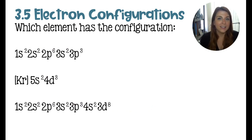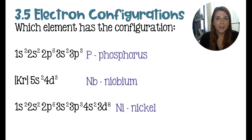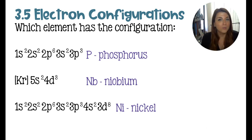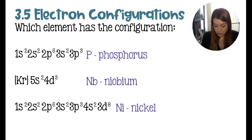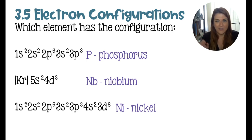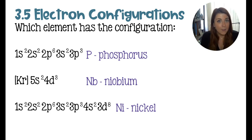Now I would love for you to look at these configurations and tell me the element they represent. 3p3 represents phosphorus — since it's in the p block there's no shifting, so I go to period 3 in the p block and count three elements over. For the configuration krypton plus 5s2 plus 4d3: because of the d-shift ending in 4d, I add one to get the period number, placing it in the fifth period of the d-block. Counting three elements into the fifth period d-block gives Nb, which is niobium.